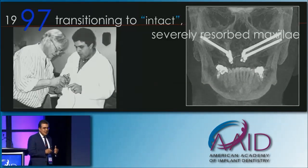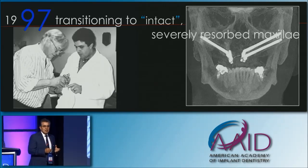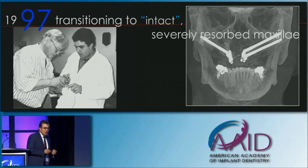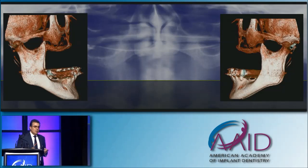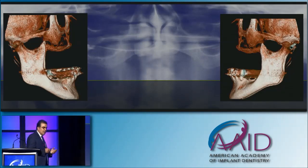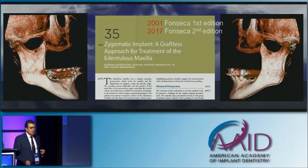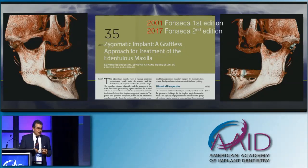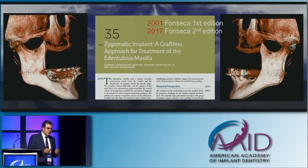Then in 1997, we started thinking of bringing this into the intact maxilla, and we started designing and teaching surgical courses to discuss the treatment of the intact maxilla with the zygoma implant. The entire surgical protocol was published in 2001 in Fonseca's first book, and now we're updating it with the current concepts I'm going to be discussing with you today.